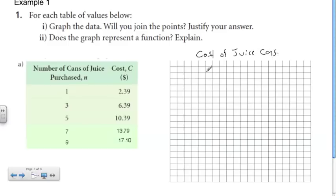The first thing I like to do is to title my graph. Here we're talking about the relationship between how many cans I have and the cost of those cans, so I'm going to say cost of juice cans. You should always label your tables. Now we need to do our values here.